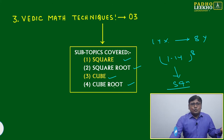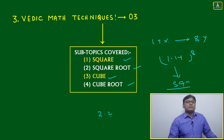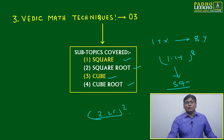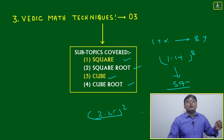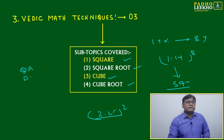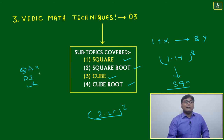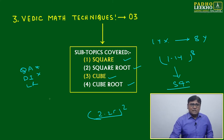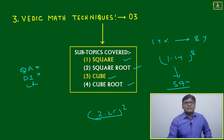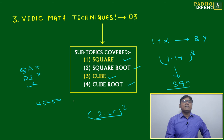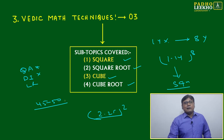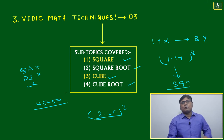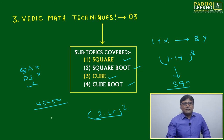In CAT you can't expect a direct question like 'find the square of 2.25' — that kind of direct question won't come; it may appear in SSC or elsewhere. But indirectly, square, square root, cube, and cube root will directly affect your QA and DI, and indirectly affect LR as well. The session will run for around 45 to 50 minutes, and I am very hopeful you will enjoy it. After completion of the session I will reconnect and discuss the plan for the next workshop.